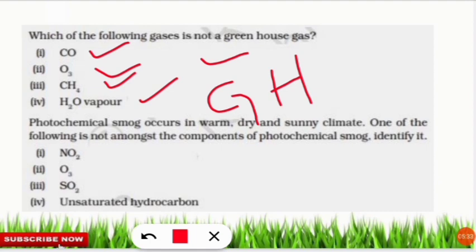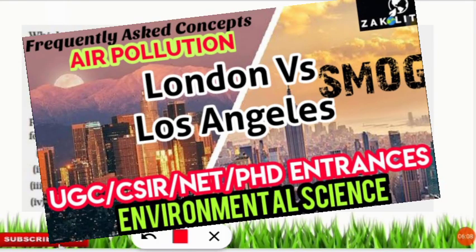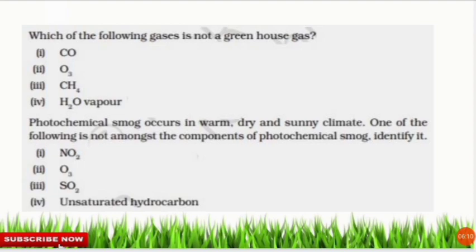The next question: photochemical smog occurs in warm, dry, and sunny climates. Which of the following is not a component of photochemical smog? The correct answer is option three — sulfur dioxide is not a component of photochemical smog; it is a component of classical smog, also known as London smog. A separate video on the difference between photochemical and classical smog is linked in the description.